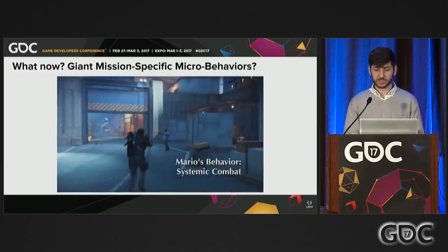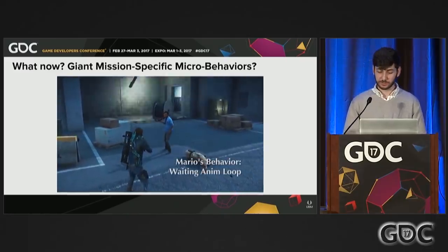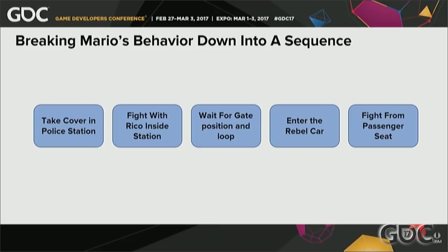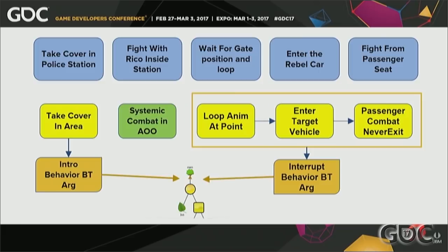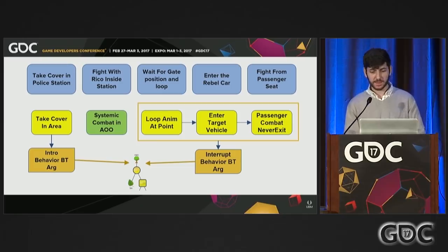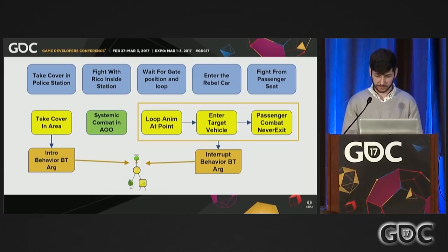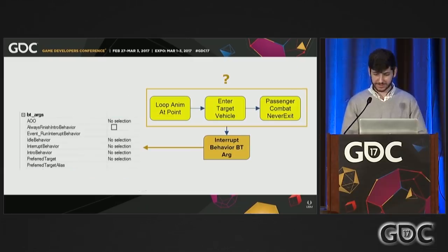There needed to be a way for mission designers to craft their own sequences without ever needing to touch behavior tree script. Looking at what the mission designer really needed — Mario performing a sequence of behaviors — if we abstract away the mission-specific details, we have an intuition that we could puzzle this out with the micro behaviors and the system we have. Maybe 'take cover in area' can be Mario's intro behavior, then we release him into systemic combat for a while, then trigger a sequence of micro behaviors as his interrupt behavior when it's time for Mario to wait for the gate to be opened. But wait — a sequence of micro behaviors? We only have one slot for an interrupt behavior.